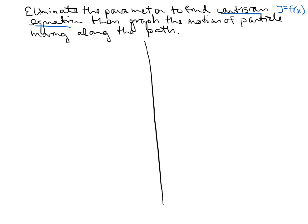First example: let's say that x is equal to t cubed and y is equal to t to the sixth, where t goes from negative infinity to positive infinity. Parametric equations include bounds — that's really important because that's what gives the motion. Eliminating the parameter: t cubed equals x, and y equals t cubed times t cubed. Since t cubed equals x, we get y equals x squared.